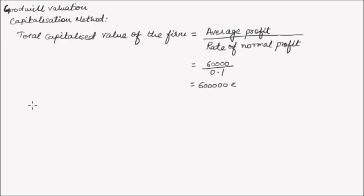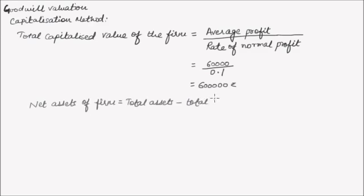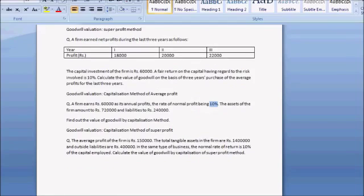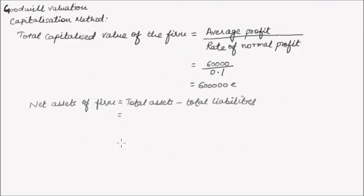Next, we need to calculate the net assets of the firm. Net assets equals total assets minus total liabilities. The total assets were Rs. 7,20,000 and liabilities are Rs. 2,40,000. So 7,20,000 minus 2,40,000 gives us Rs. 4,80,000.